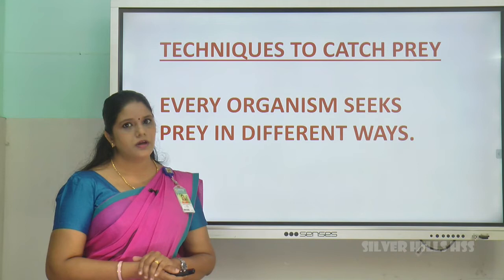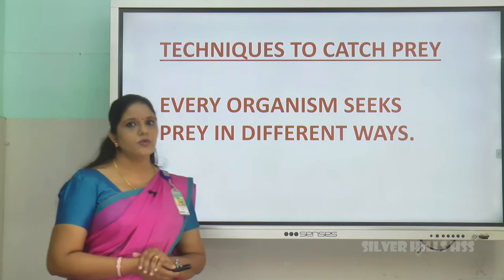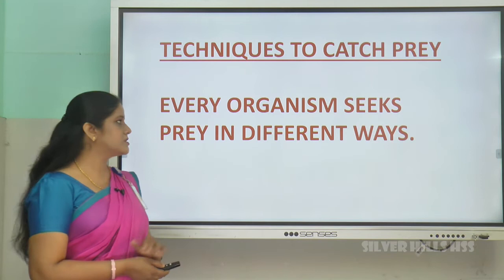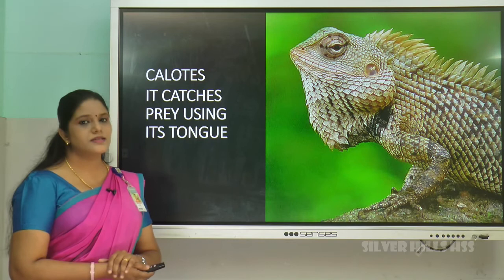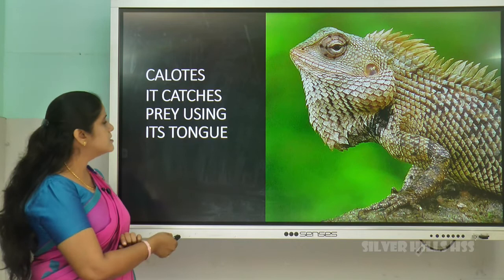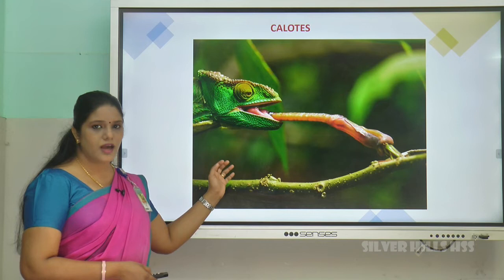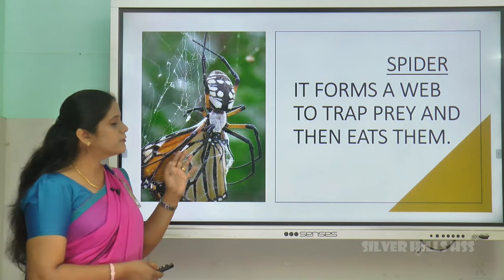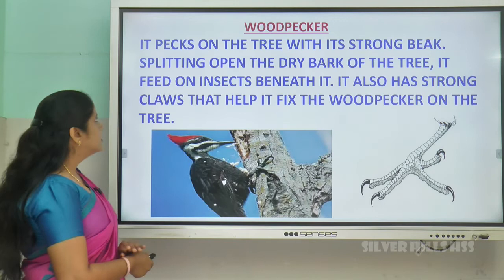The next topic is about techniques to catch prey — prey means their food. How do organisms catch their prey? Different techniques are used. Every organism uses different techniques to catch its prey. The chameleon uses its sticky tongue to catch its prey, as you can see in this picture. Spider forms a web to trap its prey.